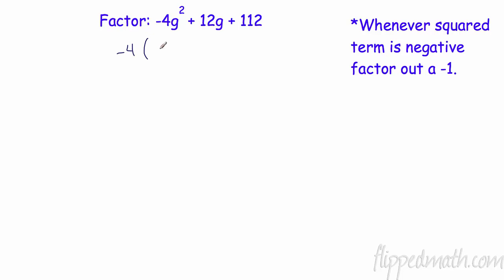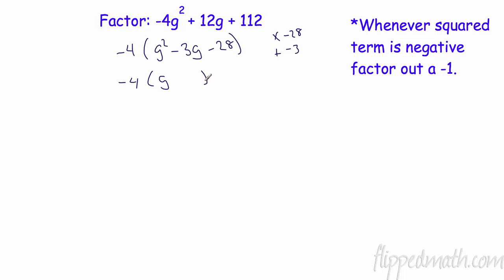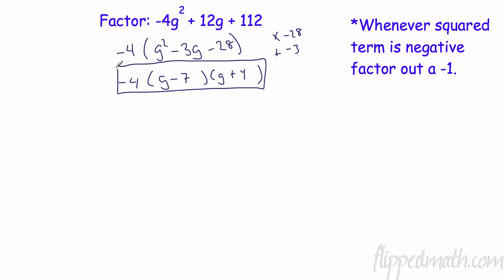Negative 4g squared divided by negative 4 is g squared. Be careful here — 12g divided by negative 4 is negative 3g, and 112 divided by negative 4 is negative 28. That negative is important — it changes the signs inside. Now we need two numbers that multiply to negative 28 and add to negative 3. Putting g in the front, and since our leading coefficient is 1 we don't need to divide. Two numbers: negative 7 and positive 4. Negative 7 times 4 is negative 28, and negative 7 plus 4 is negative 3. Double factoring — easy peasy lemon squeezy.